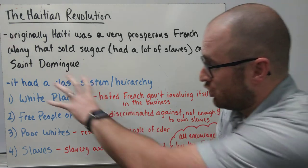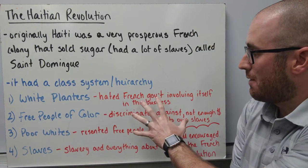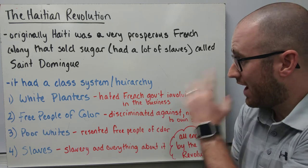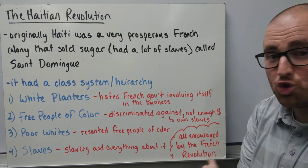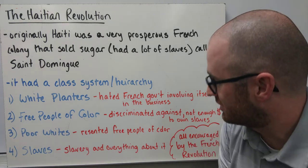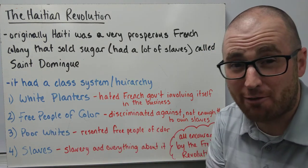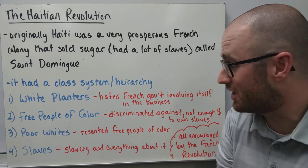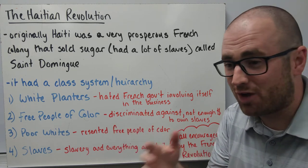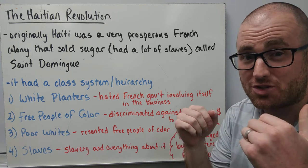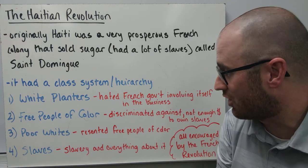The blue in the diagram represents the social class system, and the red represents what each group hated about being controlled by France — all of which was fueled by the French Revolution. The white planters hated that the French government was getting involved in their business and trying to make slavery life a little bit easier, when the white planters really wanted to drive slavery to get sugar production up.